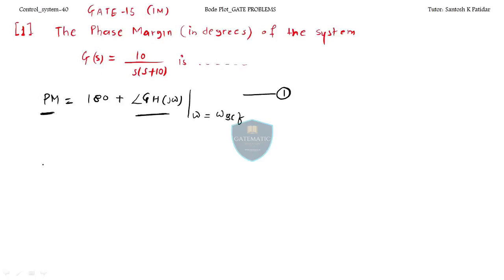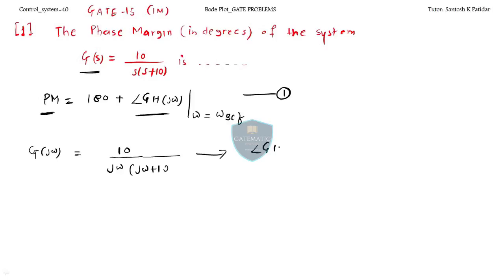This is the equation in which we have to put the value of the phase provided by the system at ω equal to ω_gcf. For this system, let us convert first into jω. Since this is unity feedback, H(s) = 1, giving us 10/(jω(jω + 10)).